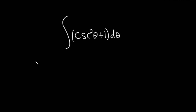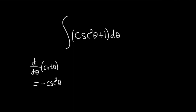If you take the derivative with respect to theta of cotangent of theta, recall that this is equal to negative cosecant squared of theta. So in this example we have cosecant squared of theta, and when we integrate cosecant squared of theta we're going to get negative cotangent theta.